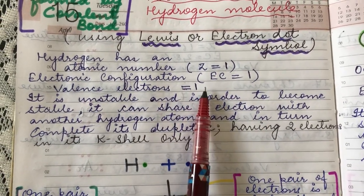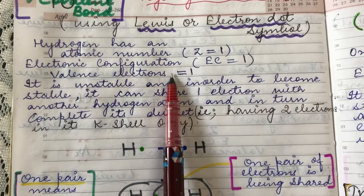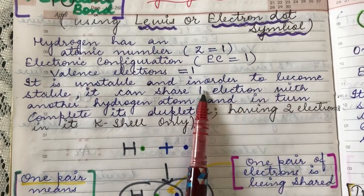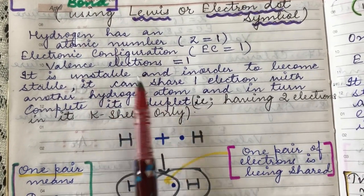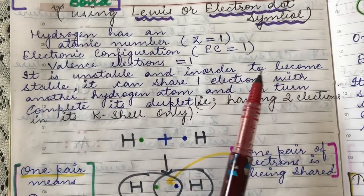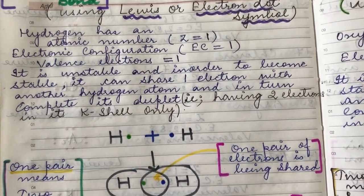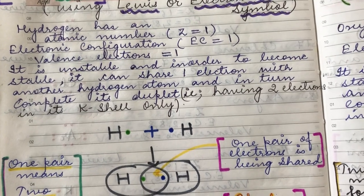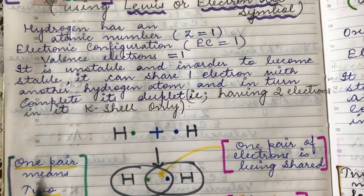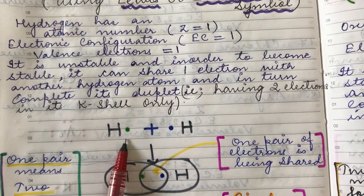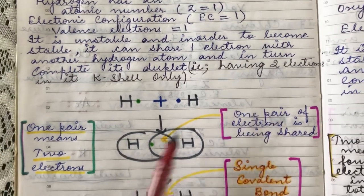To become stable, hydrogen can bond with another atom that provides it with one more electron to complete its duplet. Since hydrogen is a non-metal, it can never lose electrons — it can only gain or share electrons. Today we discuss the formation of hydrogen molecule, which involves only covalent bonding, not ionic bonding. Hydrogen can easily share one electron with another hydrogen atom to form a covalent bond.